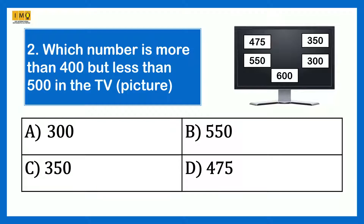Which number is more than 400 but less than 500 in the picture shown? Option A 300, Option B 550, Option C 350, Option D 475. The answer is Option D 475. From the picture we can see that only 475 is greater than 400 and less than 500.